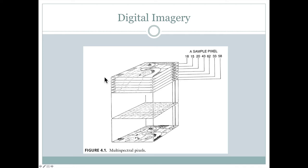And each of these bands would be measuring a different portion of the electromagnetic spectrum. So for example, this one could be measuring red, the red portion of the electromagnetic spectrum, this one the blue portion, this one the green portion, and so forth.